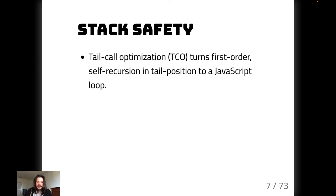A common way around this is something called tail call optimization. Tail call optimization is kind of a misnomer — is it really an optimization if it's necessary to write correct programs in a functional language? The gist is that it turns first-order self-recursion in tail position to a JavaScript loop. First order just means we only call the function recursively in a non-higher-order context — not passed to a function or captured under a lambda. And self-recursion means we only call a single function recursively, as the last thing to evaluate.